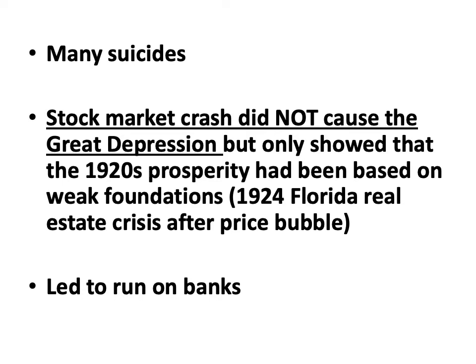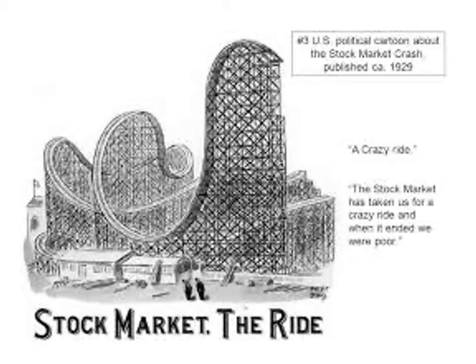The stock market crash immediately led to what's called a run on the banks — people ran to the banks to get their money out. This is a cartoon from 1929 titled 'The Stock Market — The Ride,' portraying the stock market as a roller coaster at an amusement park. It goes up, up, up, and then just ends with people falling down. There's also a photo of a savings bank in the Midwest with people lined up at the doors — that's a run on the bank.